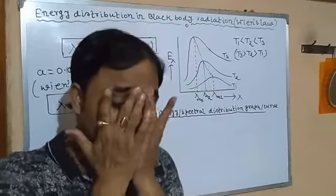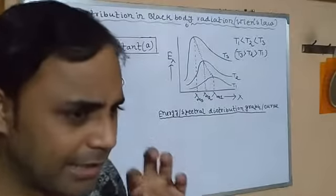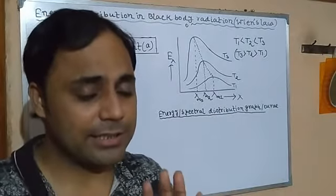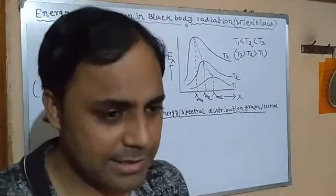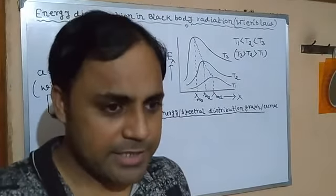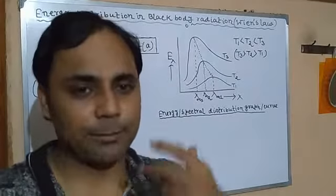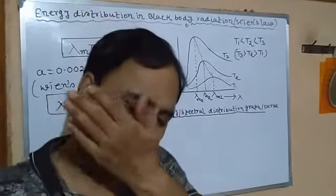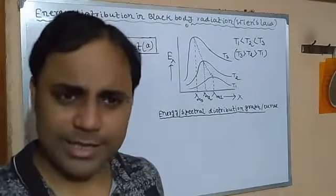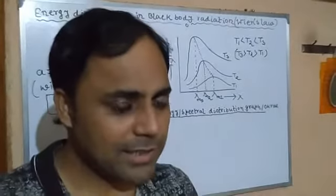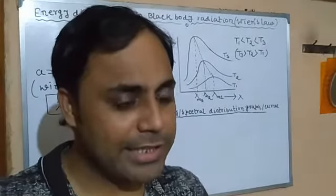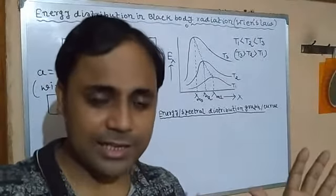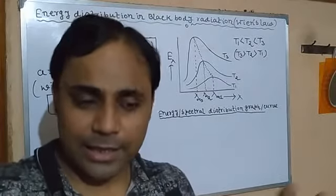Now recall what was discussed regarding absorption and emission: when we start heating any object, at the beginning we cannot see any color. But this doesn't mean it doesn't emit any radiation. As its temperature increases, gradually it appears red hot, and then finally when heated too much, it appears white. There are many similarities between thermal radiation and visible light, but the key difference is wavelength — thermal radiation has a slightly greater wavelength than visible light.